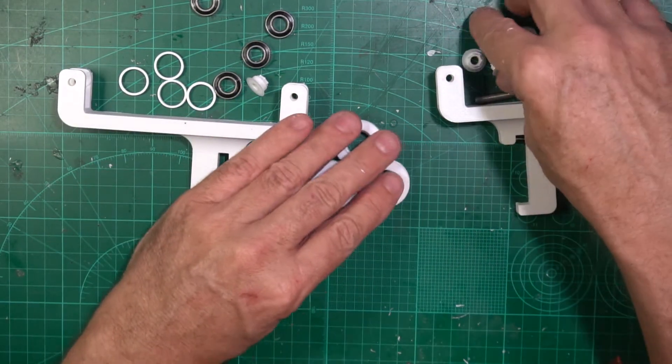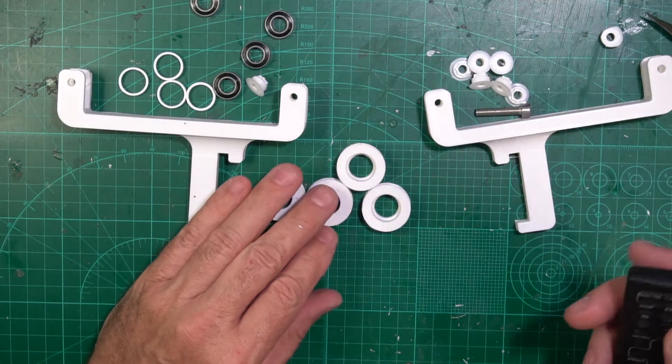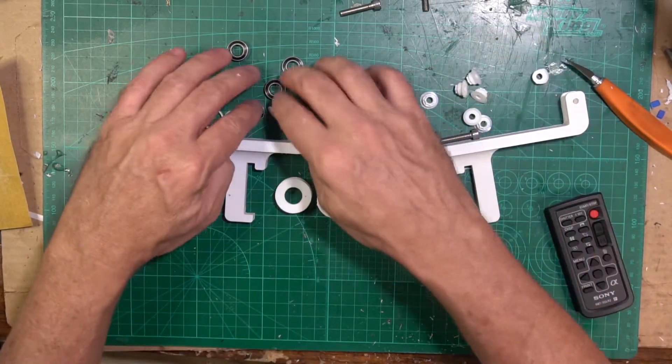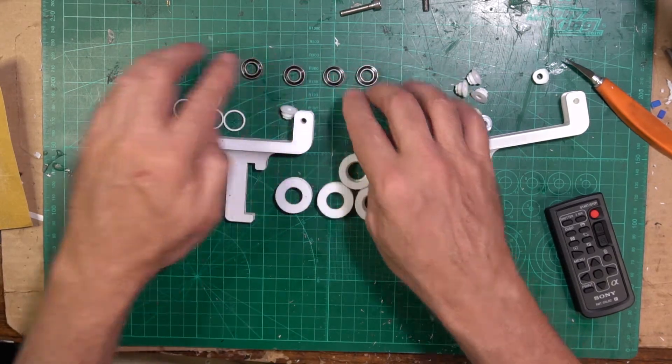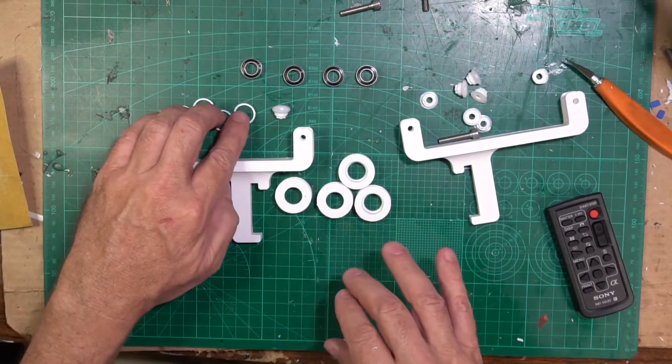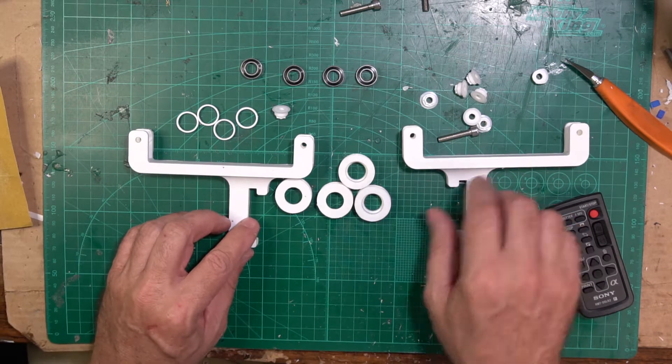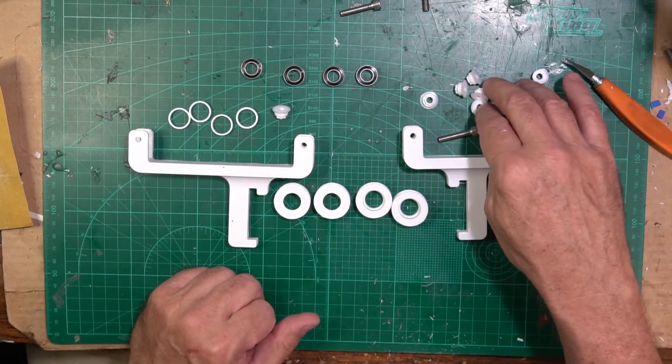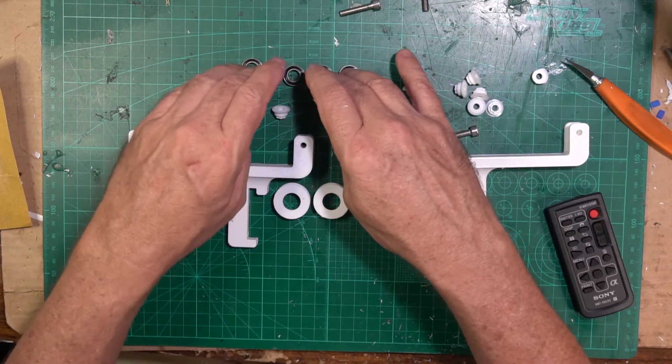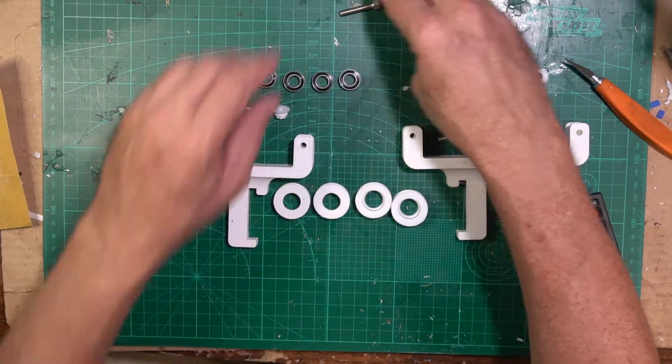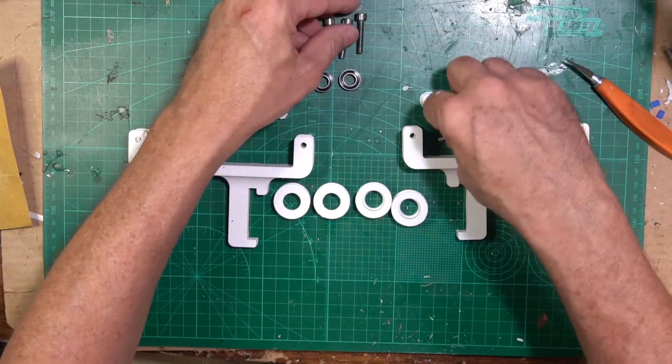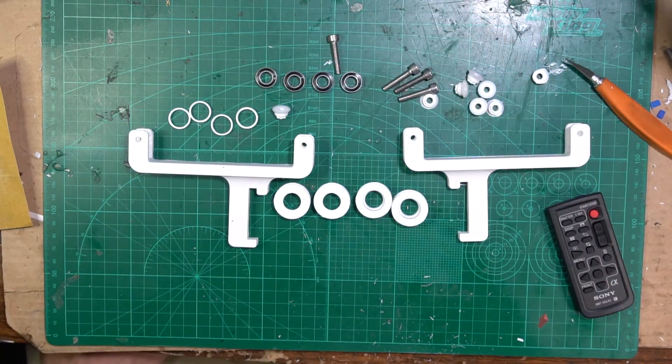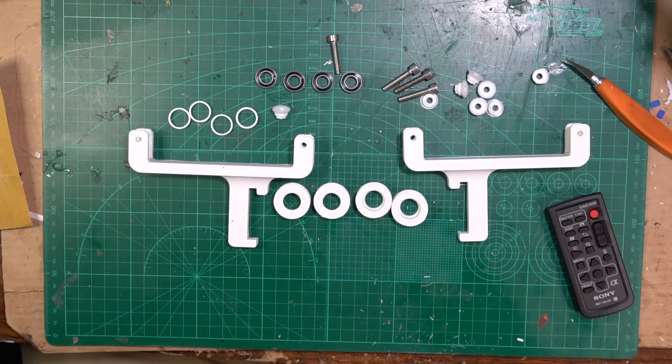The only other thing we're going to need is eight split spacers, four bearings this time, and four of these little rings. So just remember: four spools, four rings, eight split spacers, four bearings, and four five millimeter by 22 millimeter bolts. Let's go ahead and start putting it together.